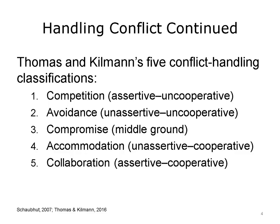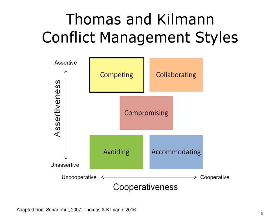Assertiveness indicates that an individual is seeking to attain his or her own concerns, while cooperativeness indicates that an individual is looking to satisfy the concerns of others. The figure on this slide representing Thomas and Kilman's conflict-handling styles illustrates the five classifications, with assertiveness on the vertical axis and cooperativeness on the horizontal axis. In the upper left corner, we see competing, a style combining assertive and uncooperative behaviors.